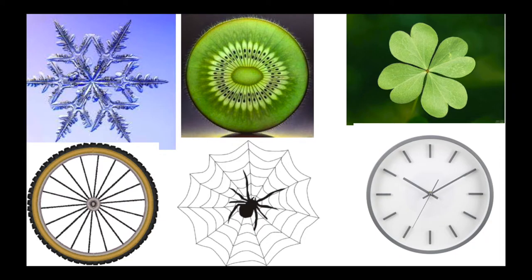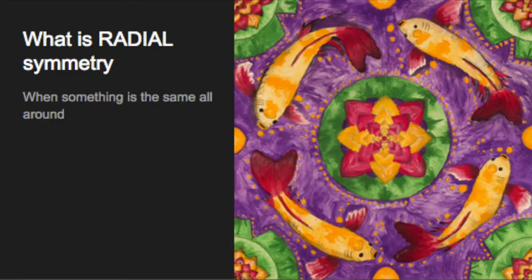Here are some examples of radial symmetry that we might see in nature or in objects around our home. You can pause here to look at how these objects all show radial symmetry — they are all exactly the same all the way around. Artists also like to use radial symmetry. Here's an example of some art where it's the same all around.